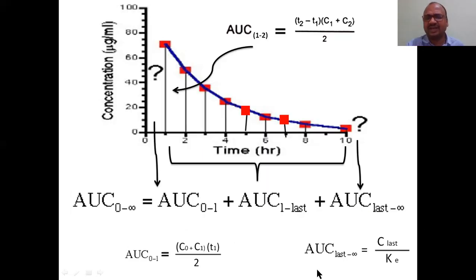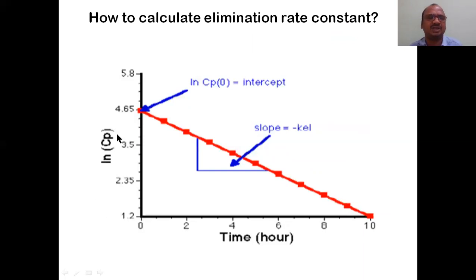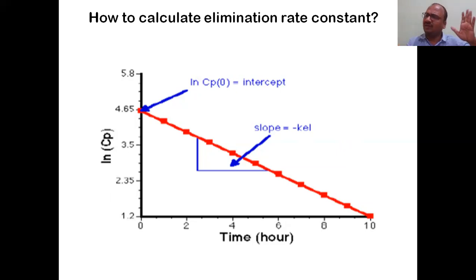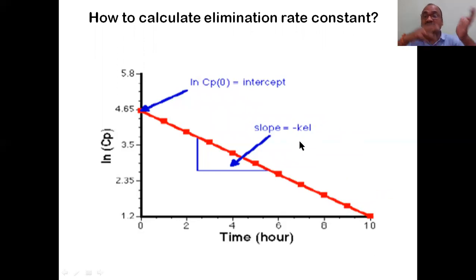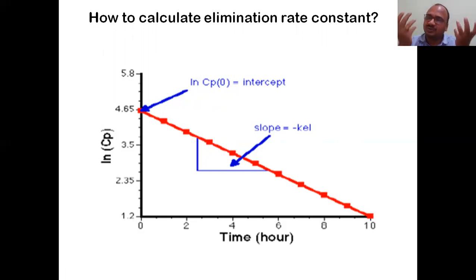To calculate the elimination rate constant Ke: take the same time scale on the x-axis, but convert concentrations to log scale on the y-axis, on a fresh graph paper. You will get a straight line. From the straight line, slope = (Y2 - Y1) / (X2 - X1). This slope equals the elimination rate constant Ke. You must use log scale to get a straight line - that is a very important key point.